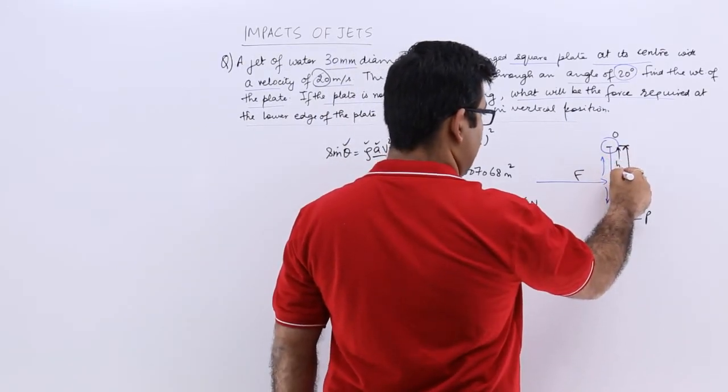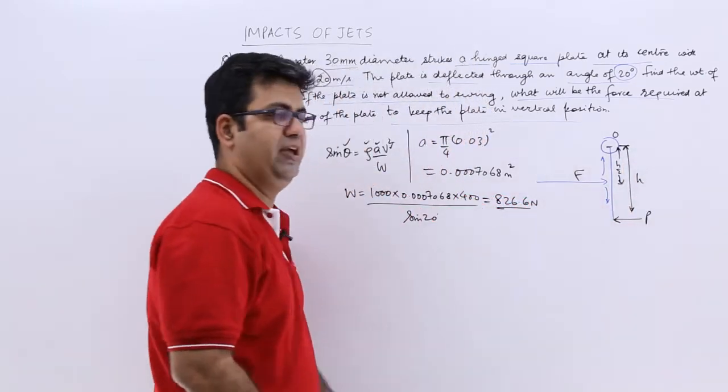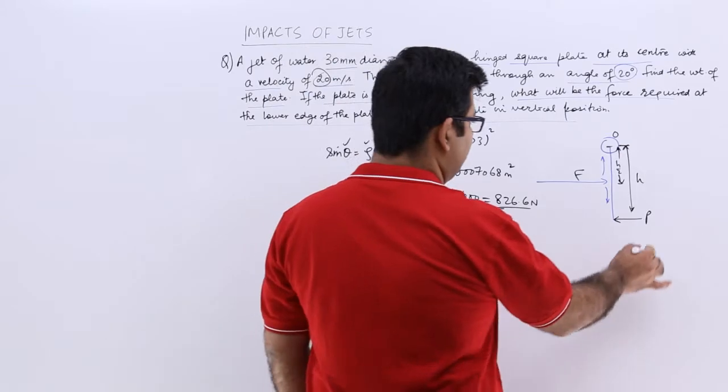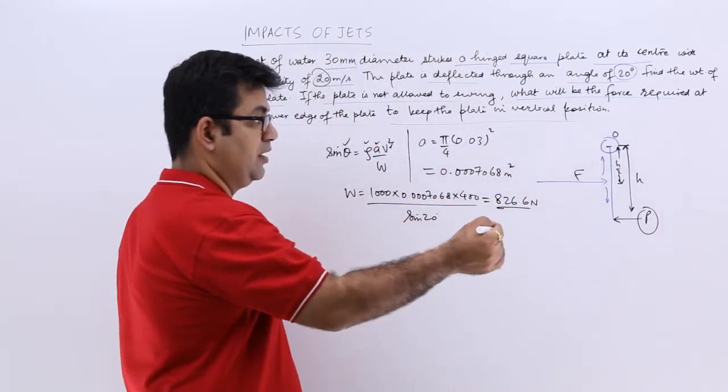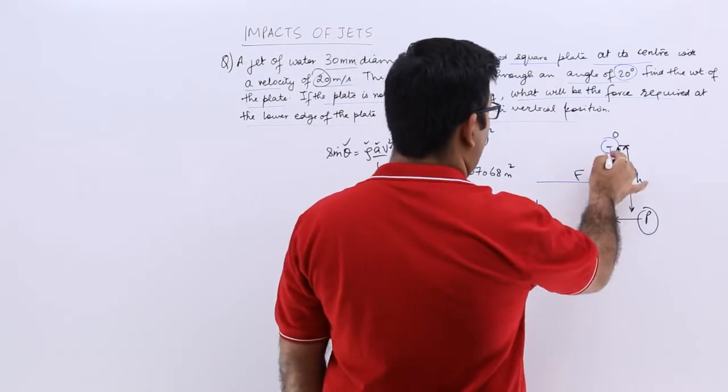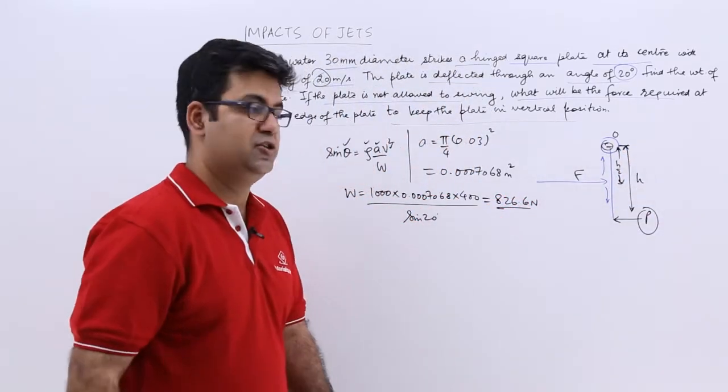This force is being applied at half of the total height. In order to find out this force which is keeping the plate vertical and not allowing it to swing, we have to equate moments about point O.